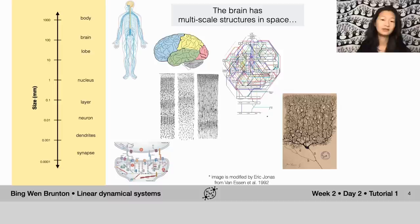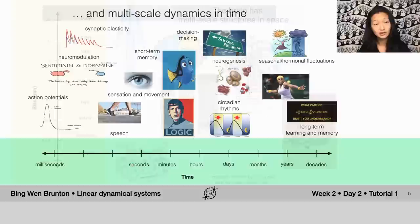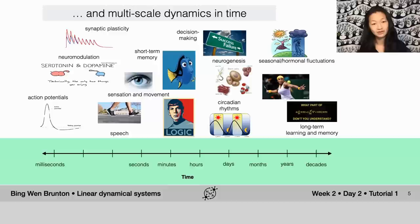Not only does the brain have multi-scale structures in space, it is also interesting because it has multi-scale dynamics in time. So here on the horizontal axis, we're looking at orders of magnitude differences in timescales.